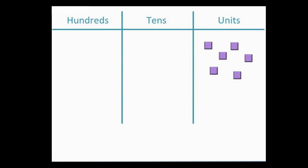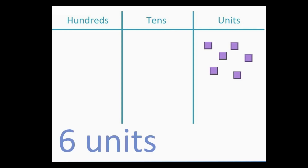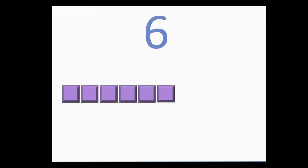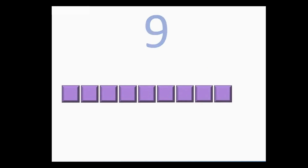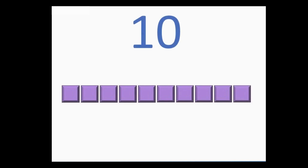The units column is also known as the ones column. Here we have one, two, three, four, five, six — six units, which is six. Here we have one, two, three, four, five, six, seven, eight, nine, ten — ten units.